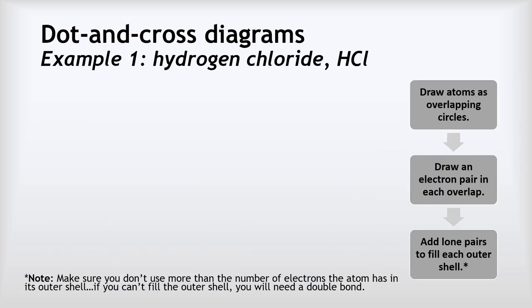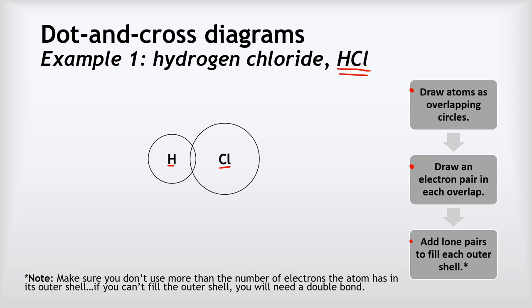Let's look at some examples of how to draw dot and cross diagrams — this is where people start to find covalent bonding quite difficult. We'll start with an easy example, which is hydrogen chloride, HCl. We're going to start off by drawing our atoms as overlapping circles, then draw an electron pair in each overlap, and then add lone pairs. With hydrogen chloride, there's just one hydrogen and one chlorine, so we draw them with overlapping circles to represent the outer shells.